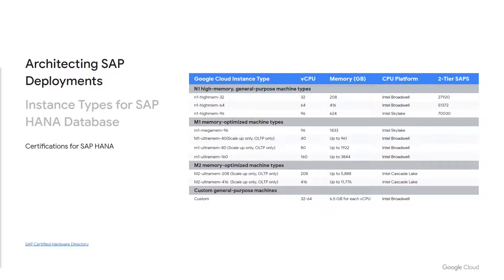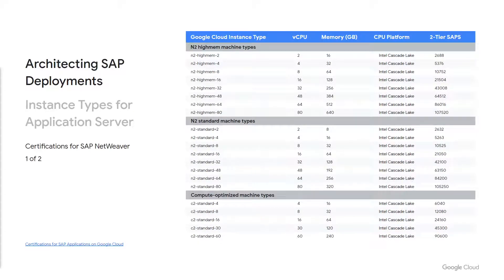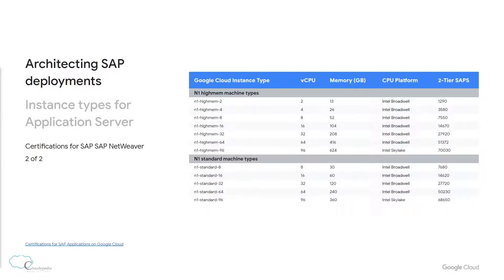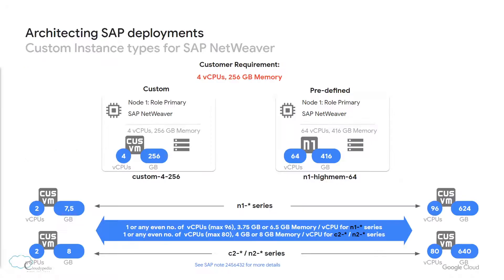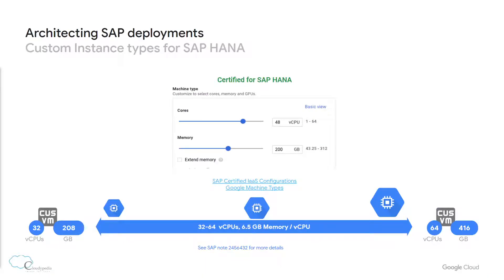This is a list of the certified SAP compute instance types of high-memory and memory-optimized machines to run SAP HANA database servers. Also, for running SAP application servers, this is a list of SAP certified machine types. Custom machines can also be used instead of predefined machine types if required. According to SAP certifications, these custom machines have to have from 32 to 64 virtual CPUs and at least 6.5 GB of memory for each virtual CPU.